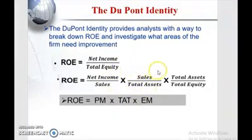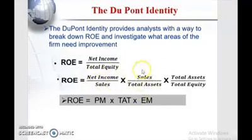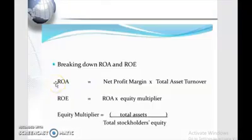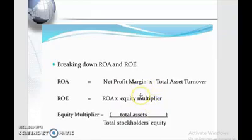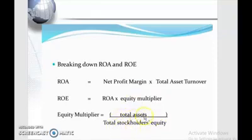For example, if we cancel out sales with sales, we will have net income over total assets, which is the return on assets. That leads us to the final form of return on equity, which equals return on assets multiplied by the equity multiplier. Given the return on assets for the firm, we can multiply it by the firm leverage, which is total assets over total equity, to get return on equity.